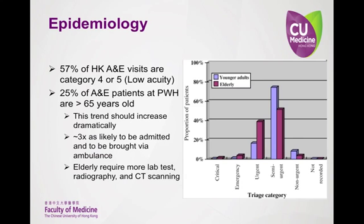I mentioned the classification of emergency department visits into urgent and non-urgent patient visits. The acuity classification system utilized in Hong Kong uses five different tiers to categorize patients based on the acuity of their complaints and reasons for presentation to the A&E department. Critical is the highest acuity classification and non-urgent is the lowest.